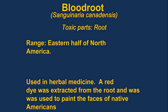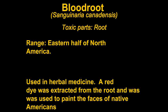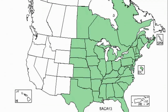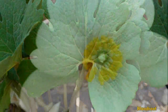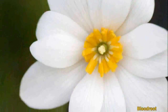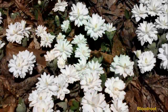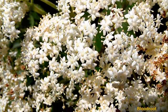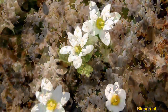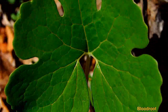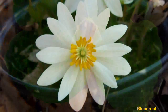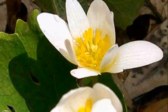Bloodroot, also known as bloodwort, red puccoon, and sometimes possum, is a perennial plant native to the eastern part of North America. Bloodroot produces morphine-like benzoisoquinoline alkaloids. Compounds in bloodroot can also be very toxic to the skin. It is also used as an antibiotic in toothpaste.